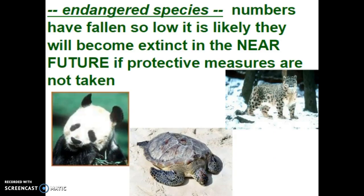So how does an animal come on the endangered species list? Their numbers have to be so low that it is very likely that they will become extinct in the very near future if nothing is done today.